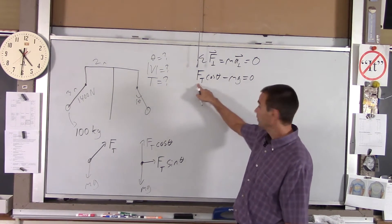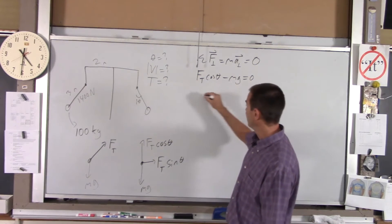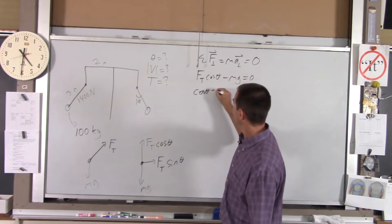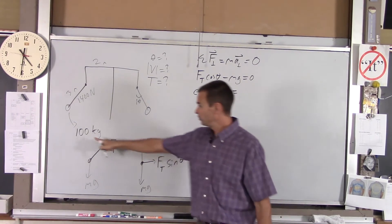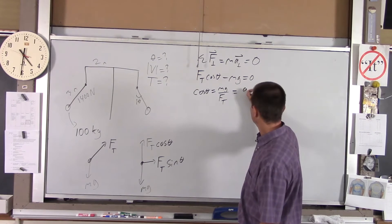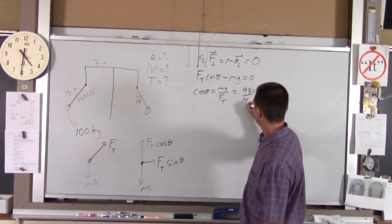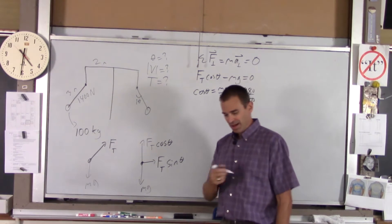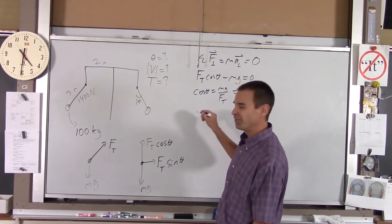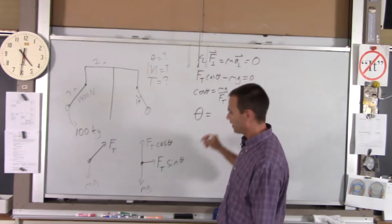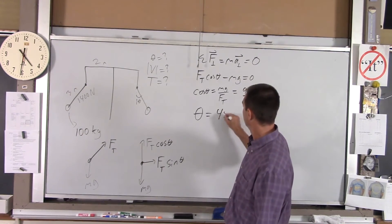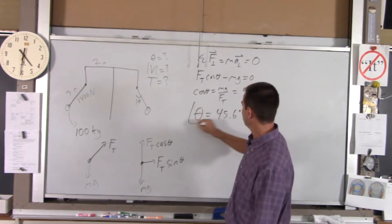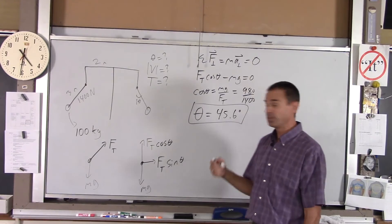I've got theta. I know that's 1400. I know that's 100. I know that's 9.8. So cosine theta will be mg over Ft. Mg is 100 times 9.8, which is 980, over 1400. And I've done the math previously. If you figure out theta, you get 45.6 degrees.